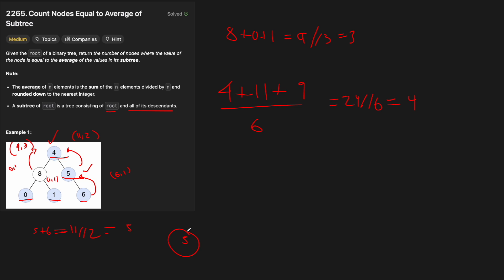This question is a relatively straightforward DFS. We start from the root node and go all the way down to the leaves. At each step, when we end our recursion and bubble up to the parent, we return the sum and the count of nodes in that subtree. At the parent, we calculate the average, and if it equals the node's value, we increment our result. Nothing really hard — just a bit of math at each step.